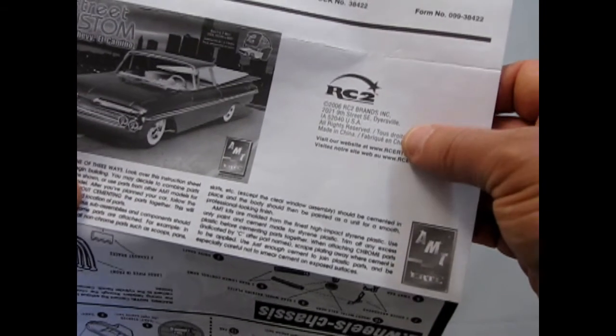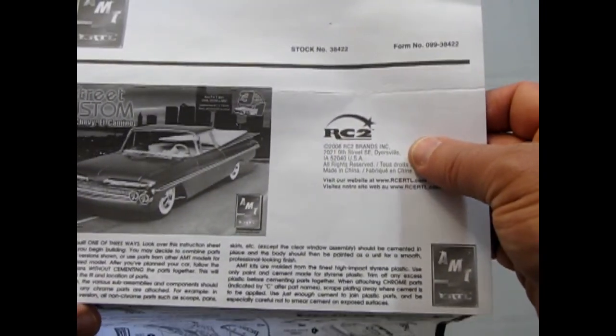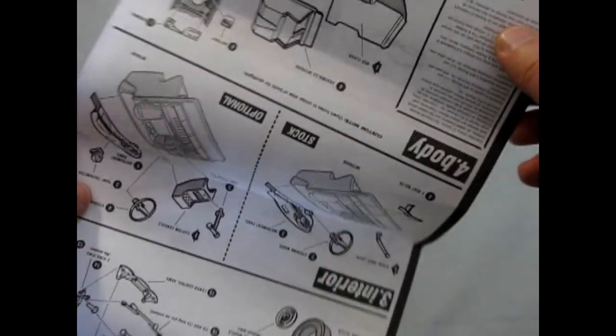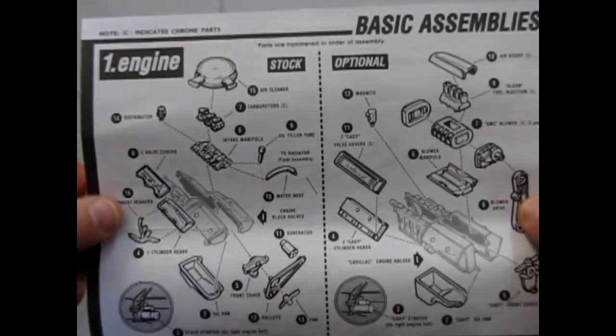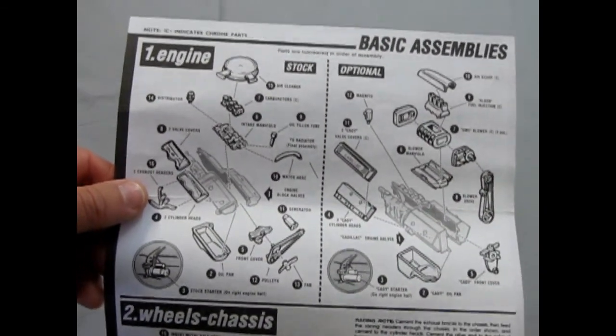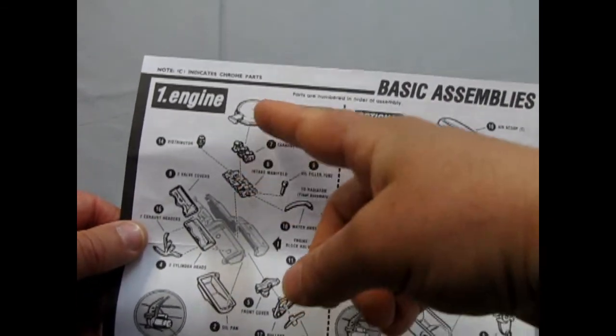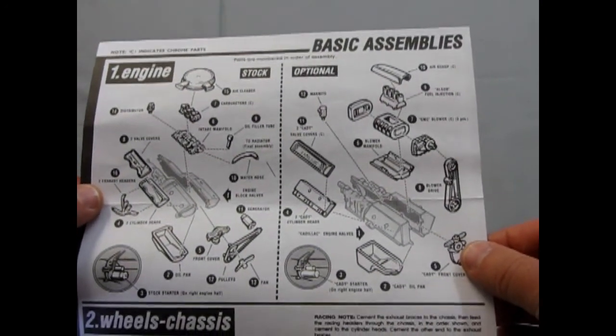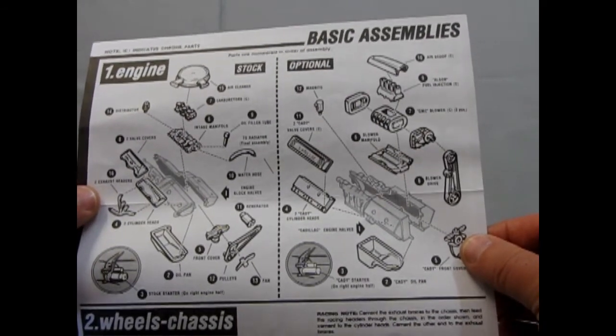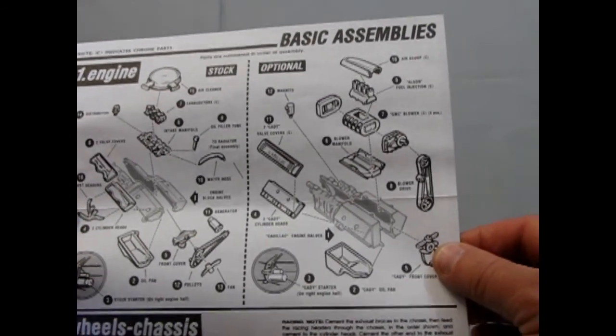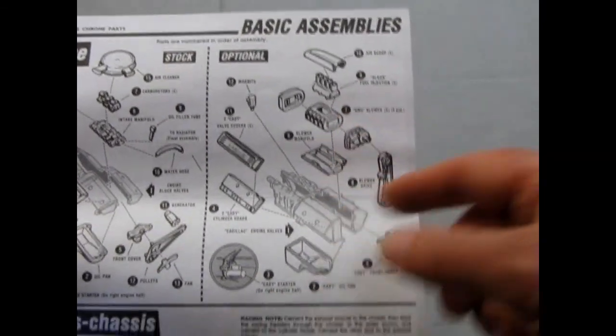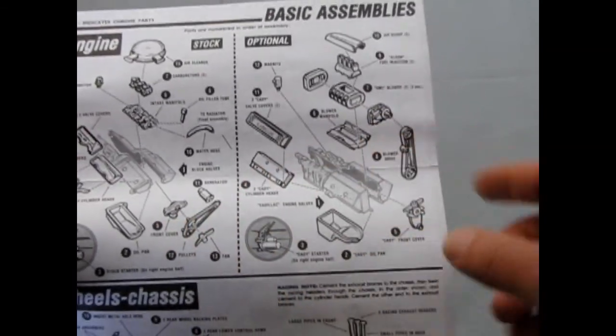Now this one came out under the Round2 RC2 label back in 2006 but the actual kit itself was designed in the 60s and part of AMT's Trophy Series. And these instructions are a pretty good reproduction of the original instructions. Actually you get your stock engine with the tri-carburetors and the big air cleaner for 1959. Yeah this is not a 427 but it is like a 396 or something in there. It gives you a full optional Cadillac motor as well with a blown injector. So you actually get two motors, the Chevy and the Cadillac.